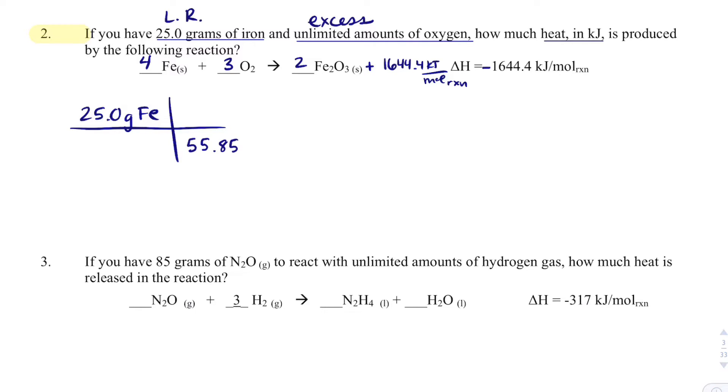First, get this to moles. According to the periodic table, there's 55.85 grams of Fe in one mole of Fe. Now this is where it's a little bit weird. Normally with stoichiometry we would mole bridge, but I'm going to go from 4 moles of Fe and convert it to the heat. 4 moles of Fe would produce 1644.4 kilojoules. When I math that out, I get 736 kilojoules. We could say negative kilojoules - the negative tells me it's being produced - or I could just say 736 kilojoules produced.